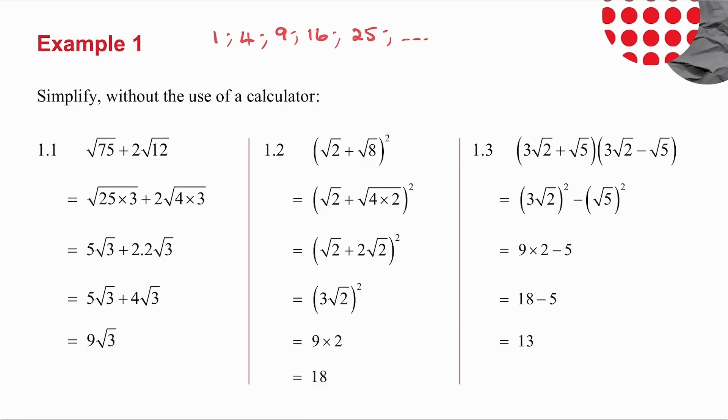In 1.3, you will notice my brackets are difference of two squares, which means my middle terms cancel out. So all I'm left with is 3 root 2 squared minus root 5 squared. 3 squared? 9. Root 2 squared? 2. Root 5 squared? 5. And I get my answer.